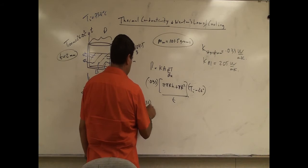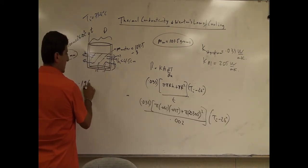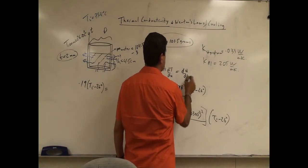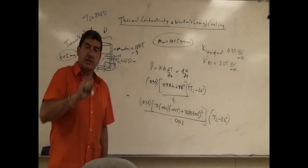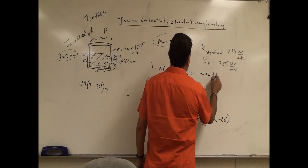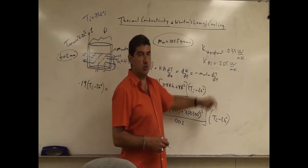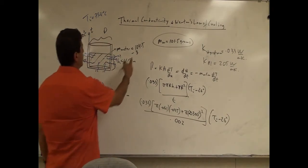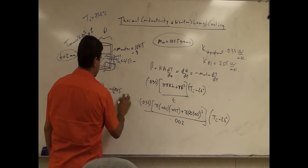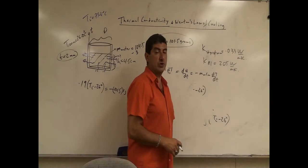Putting in all the numbers: K = 0.033, my diameter was 6.1 cm, so 2 times the radius gives the diameter. We get 0.19 times (T_i minus 26). That power conducted out is the amount of heat leaving per unit time, dq/dt, and that heat leaving reduces the temperature of the water: minus m_water × c_water × dT/dt. The mass of the water was 101.5 grams, converted to 0.1015 kilograms.